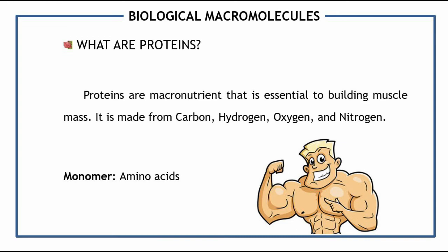Another biological macromolecule is proteins. Proteins are macronutrients essential to building muscle mass. They are made from carbon, hydrogen, oxygen, and nitrogen. The monomer of proteins is amino acids. A common scenario involving protein is people who are building muscle mass — aside from exercise, protein is a big part of their diet, whether in the form of protein shakes, juice, or even raw sources of protein like eggs.